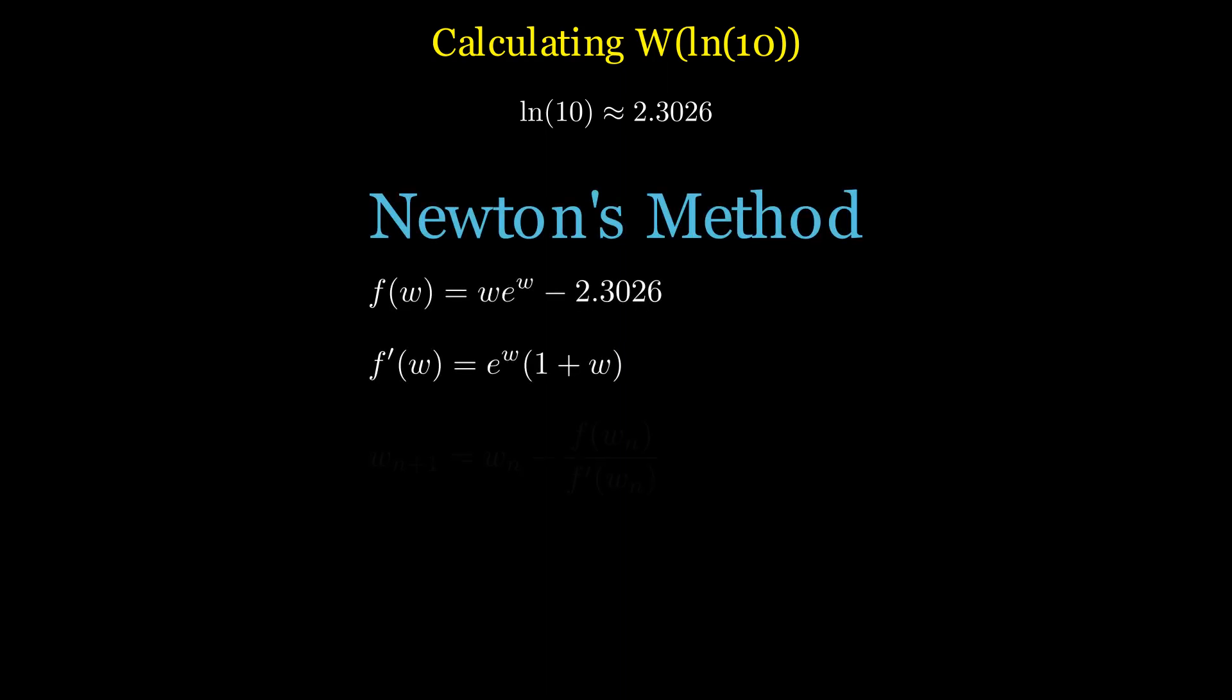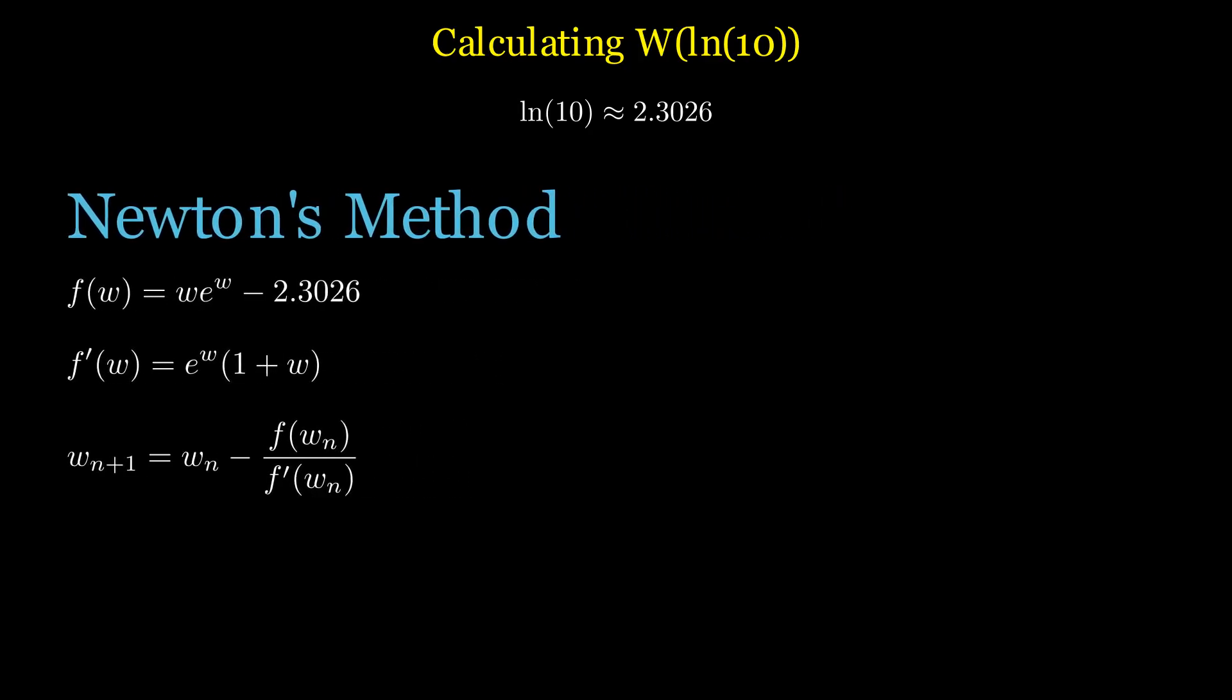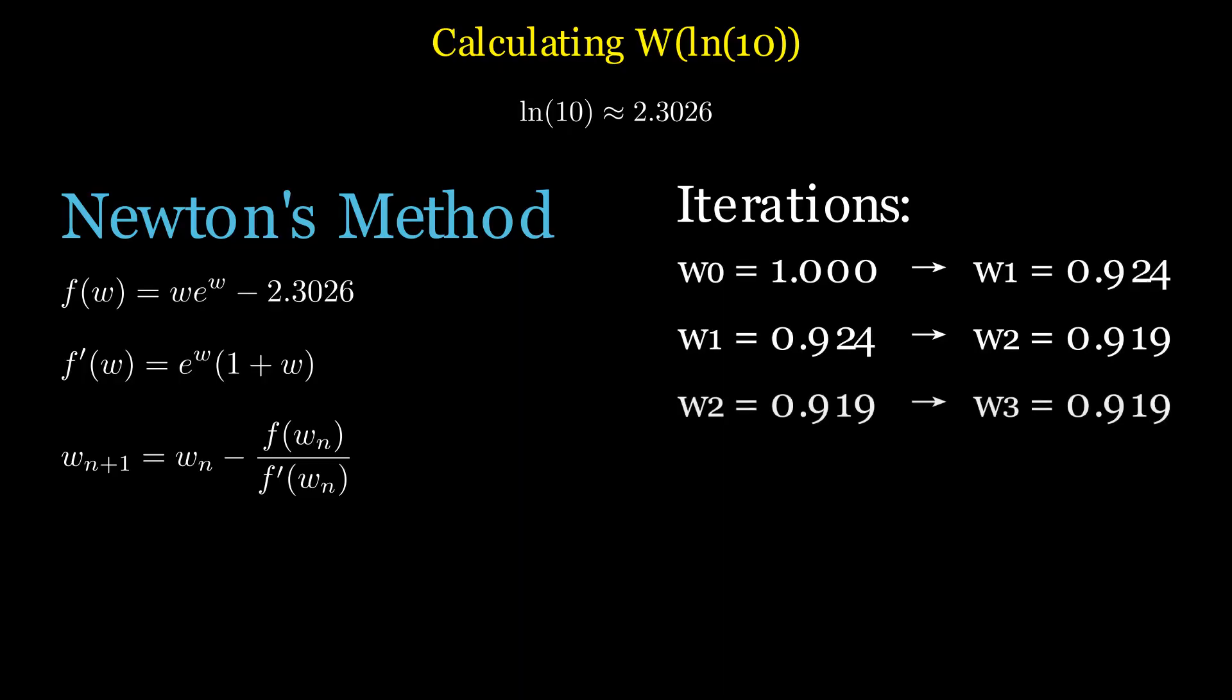Now we need to calculate the Lambert W of 2.3026. The Lambert W function doesn't have a simple closed form expression, but we can approximate its value using iterative methods. One approach is to use Newton's method on the equation f of w equals w times e to the power of w minus 2.3026 equals zero. The derivative is f prime of w equals e to the power of w times one plus w. Starting with an initial guess of w naught equals one, Newton's method gives us the next approximation using this formula. Let's watch how quickly it converges.